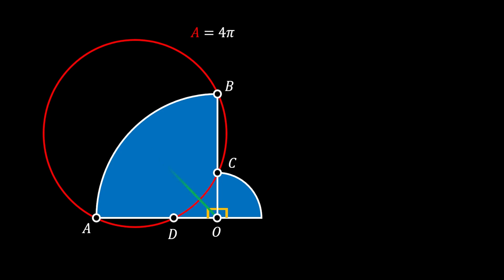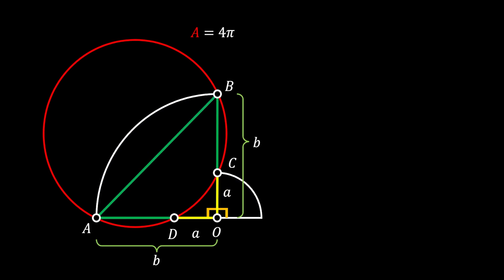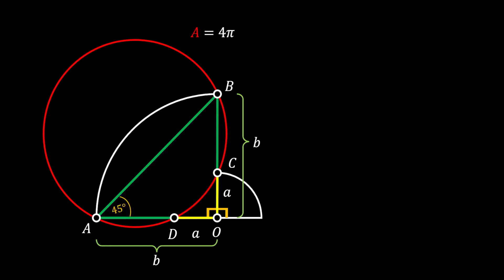From the point O, we can pull the radius of our bigger quarter circle. The lines OB and OA must be equal, so we are going to mark those two sides as B for the time being. From the intersection point C, we can extend the arc of our smaller quarter circle to get the half circle, and we can similarly conclude that the lines OC and OD must be the same — they represent the radius of the small circle, so we mark them as A. We can then pull the line from point A to point B and notice that we get a right isosceles triangle AOB, meaning the angle at point A must be 45 degrees.